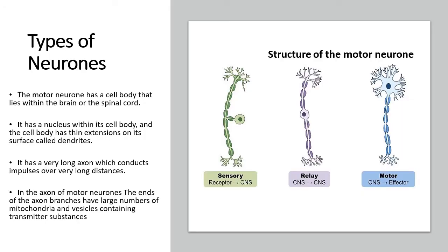We have neurons that help to transmit our nerve impulses. The three types of neurons you need to know are the sensory neurons, the relay neurons, and the motor neurons. The motor neuron is different, and I want you to realize the difference between how these look. The motor neuron transmits impulses from the central nervous system to an effector. In homeostasis, we already defined an effector, so if you haven't watched that video, please make sure you do.